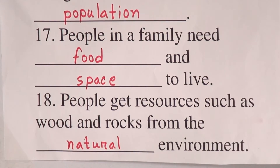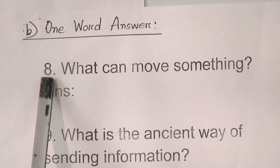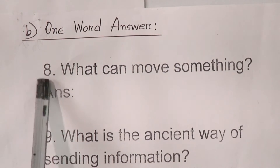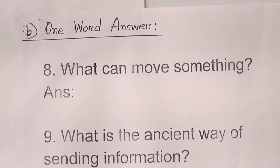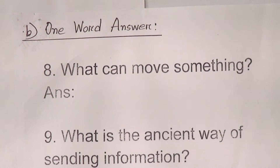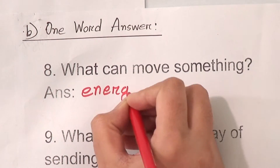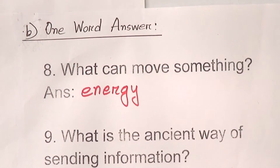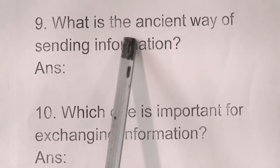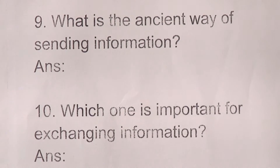Now dear students, we will do one word answers. We have already done numbers 1 to 7 in our previous class. Today we will do from number 8 to 15. Number 8: what can move something? The answer is energy. Number 9: what is the oldest way of sending information? The answer is pigeon. So we will write here: pigeon.